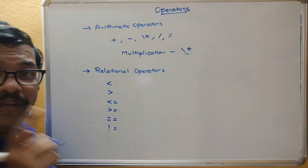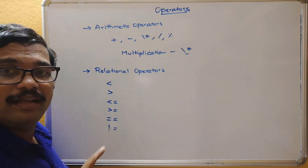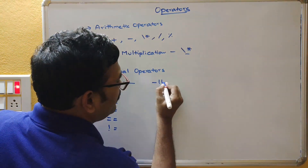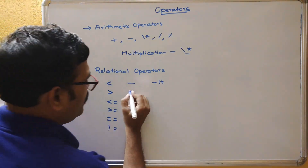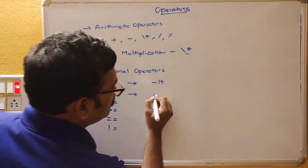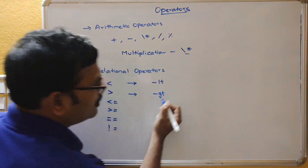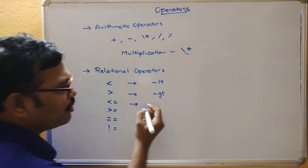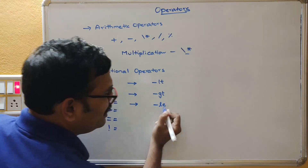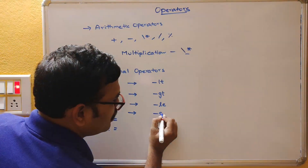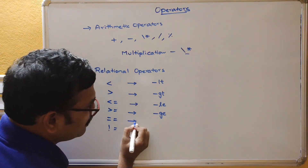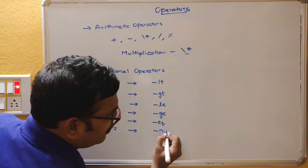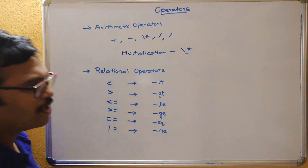We can use the symbols directly in shell script, or we can use the hyphen-based alternatives: hyphen-lt for less than, hyphen-gt for greater than, hyphen-le for less than or equal to, hyphen-ge for greater than or equal to, hyphen-eq for equal to, and hyphen-ne for not equal to. These formats can be used instead of the symbols.